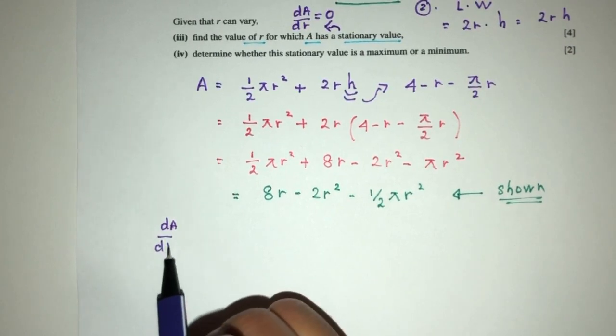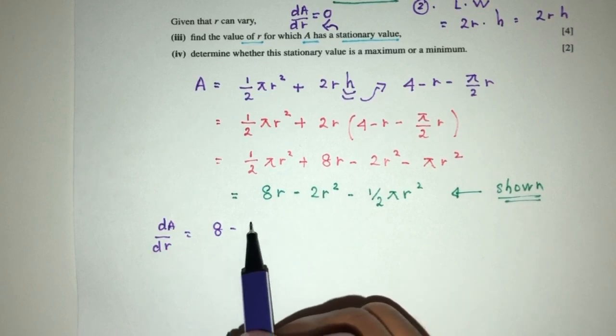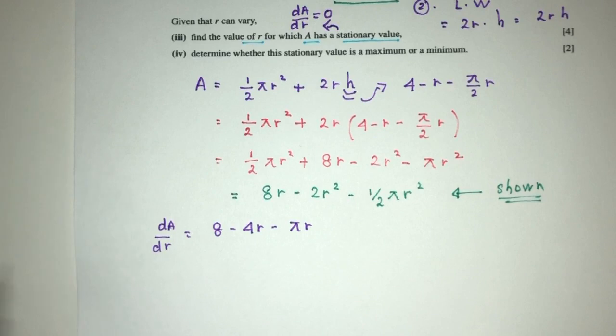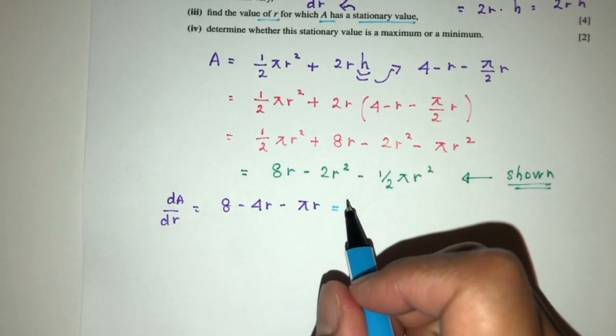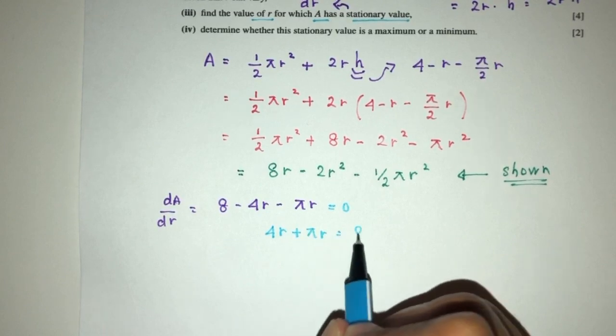So dA by dr has to be, first thing will be 8 minus 4r and then minus πr. Then equate that to 0. So you will have 4r plus πr has to be 8.